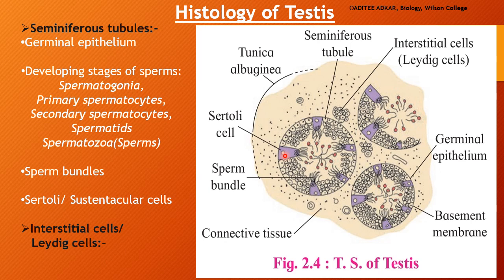Also, in the seminiferous tubule, we find some tall pyramidal cells in between. These cells are known as the Sertoli cells or sustentacular cells. These cells provide nourishment to the different developing stages of sperms and provide internal support to the seminiferous tubule. The sperm bundles are found attached to the Sertoli cells. The matured sperms are present with their heads resting on and attached to the tip of the Sertoli cells, and their tails directed inwards towards the lumen or the central part of the seminiferous tubule.